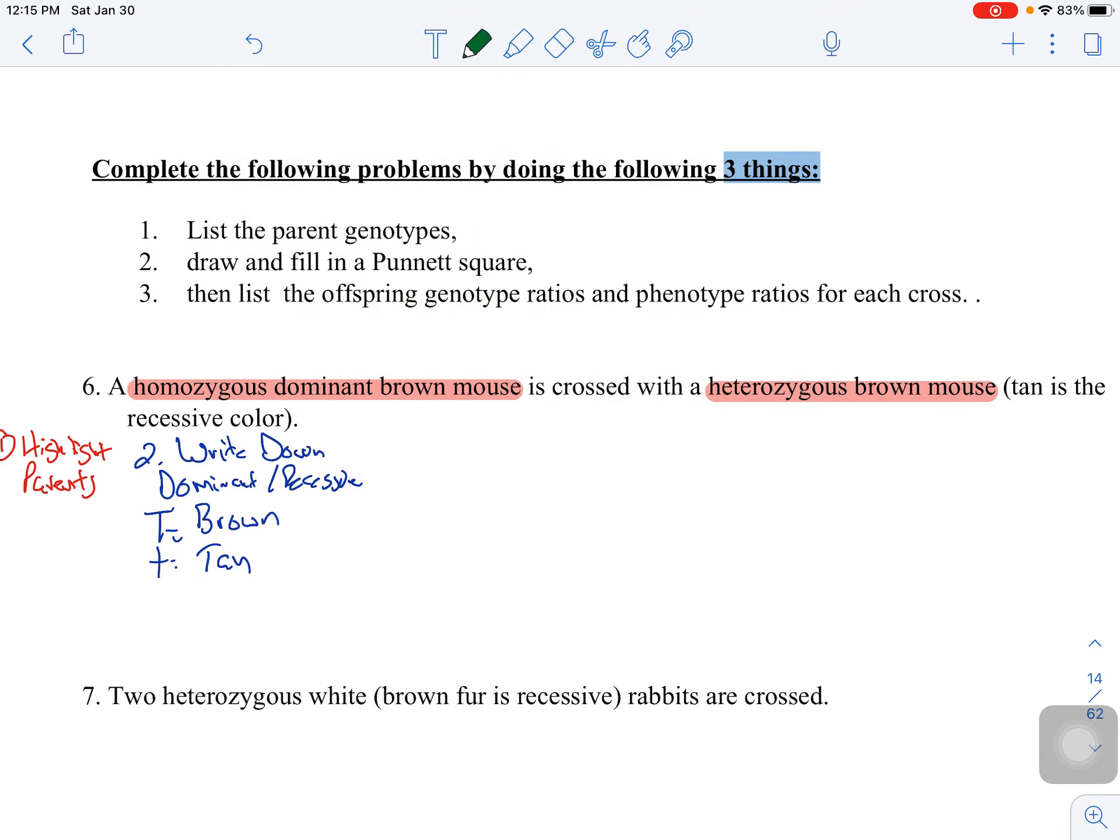Step three would be to write the cross. Now remember the cross is just as simple as this is being crossed with that and we use that cross symbol. So really now we're going back to our highlighted parts. You could write homozygous dominant up here and you could write heterozygous above there and it does help. Now we just want to make sure that we put those in our cross. That's step three.